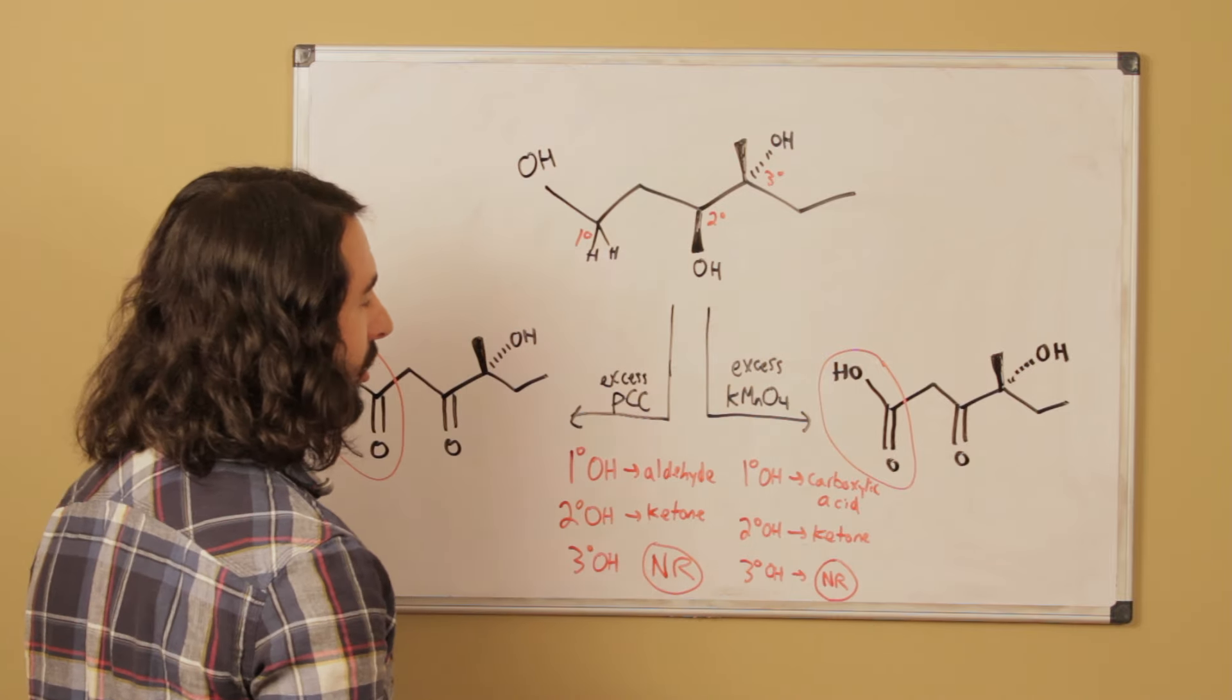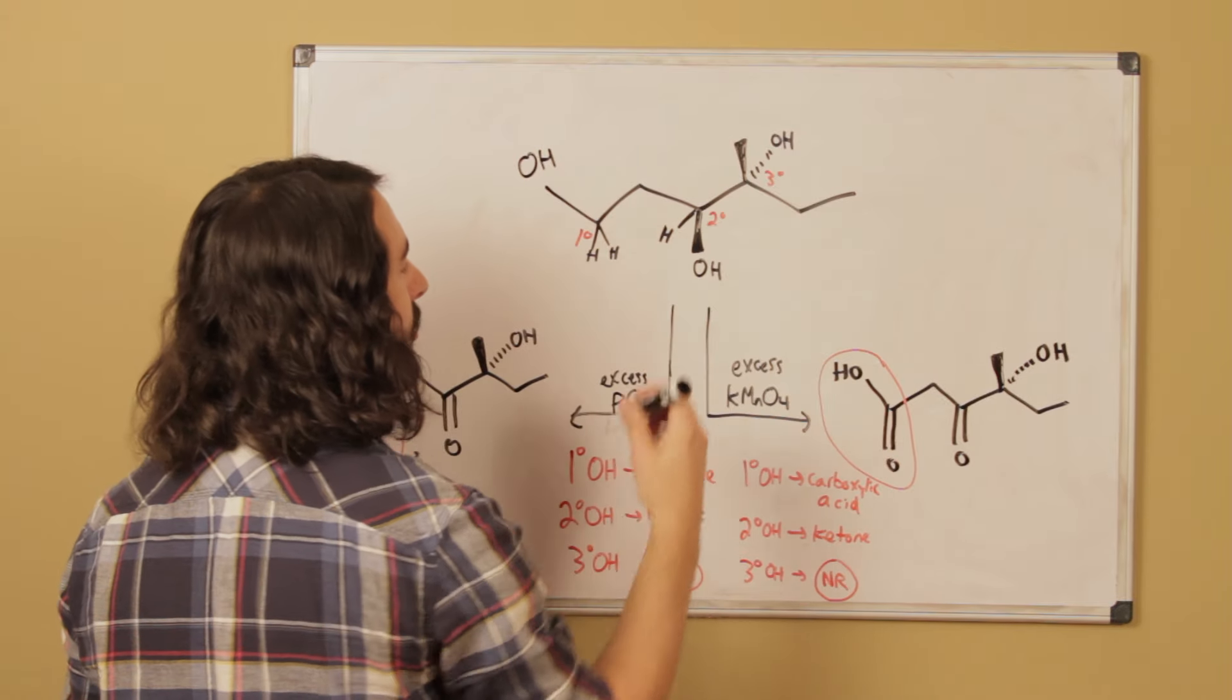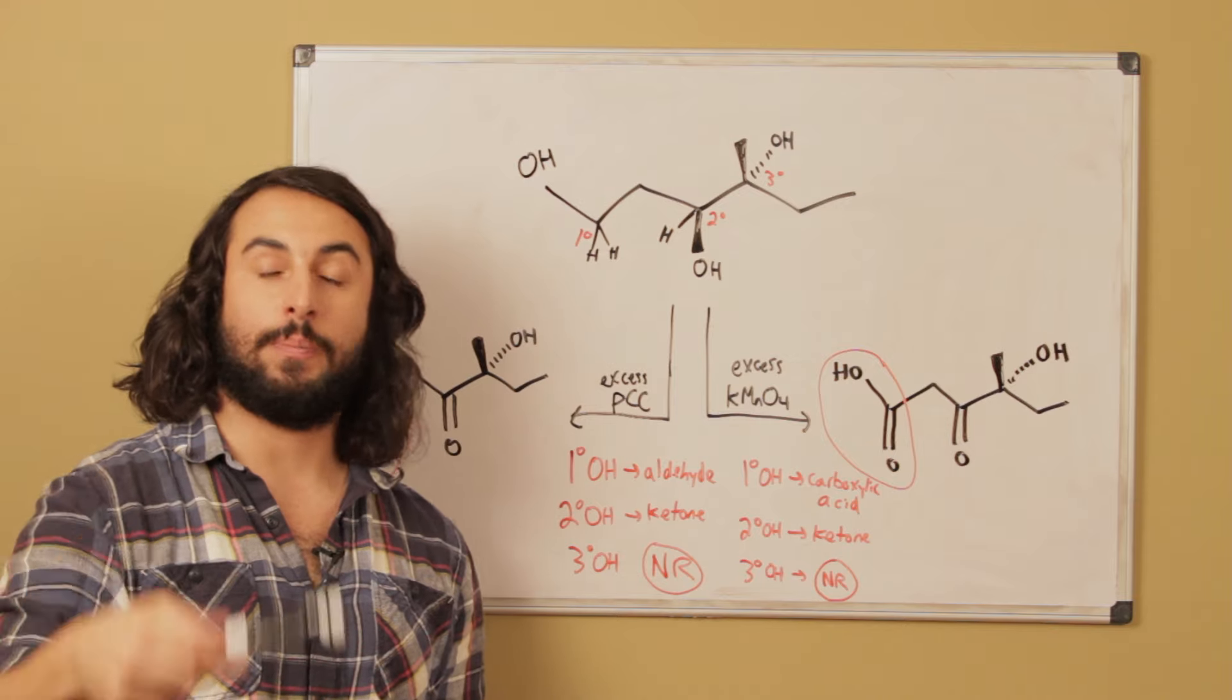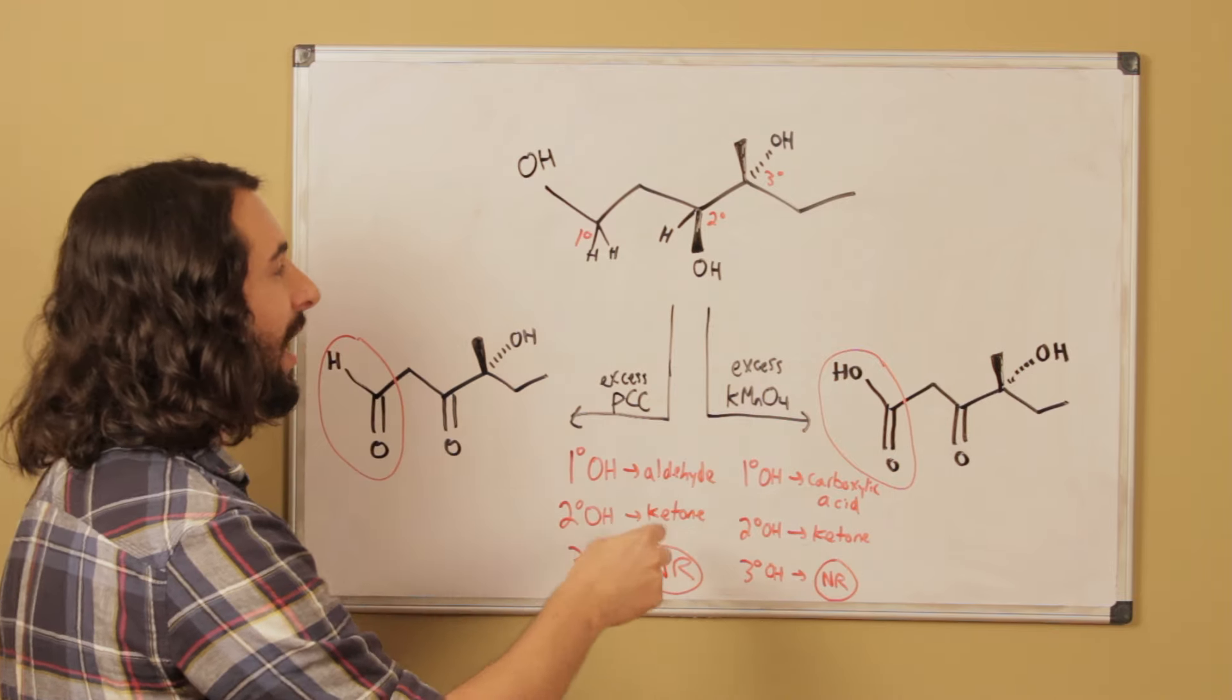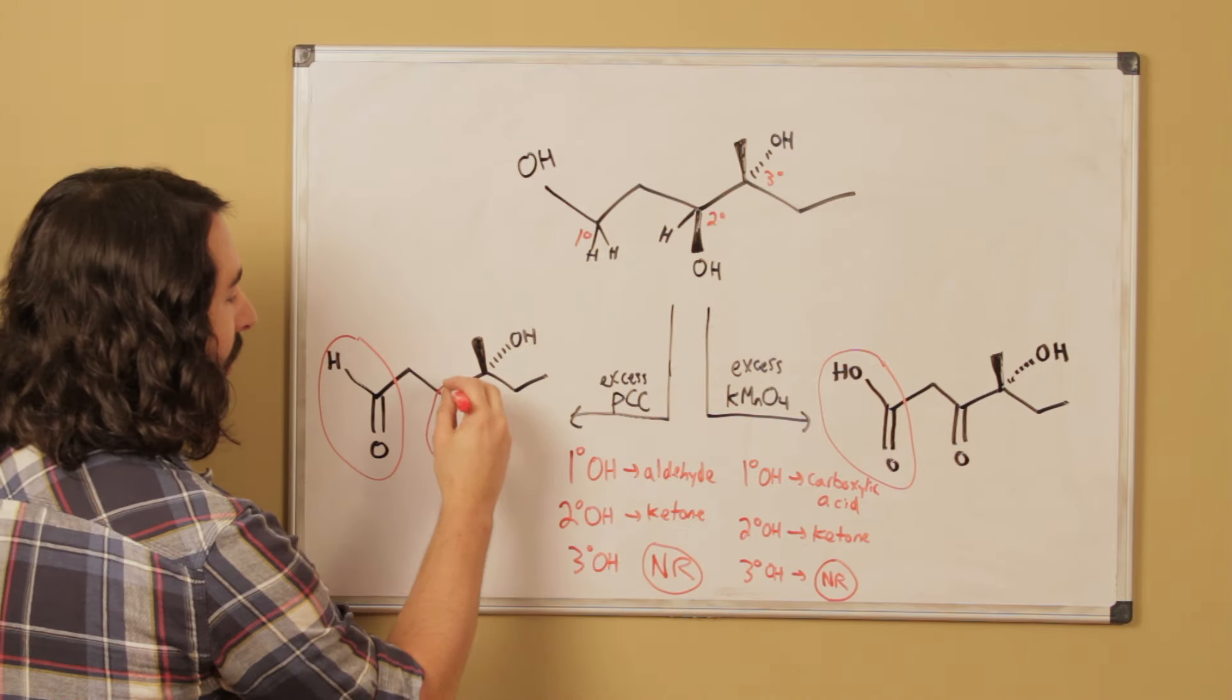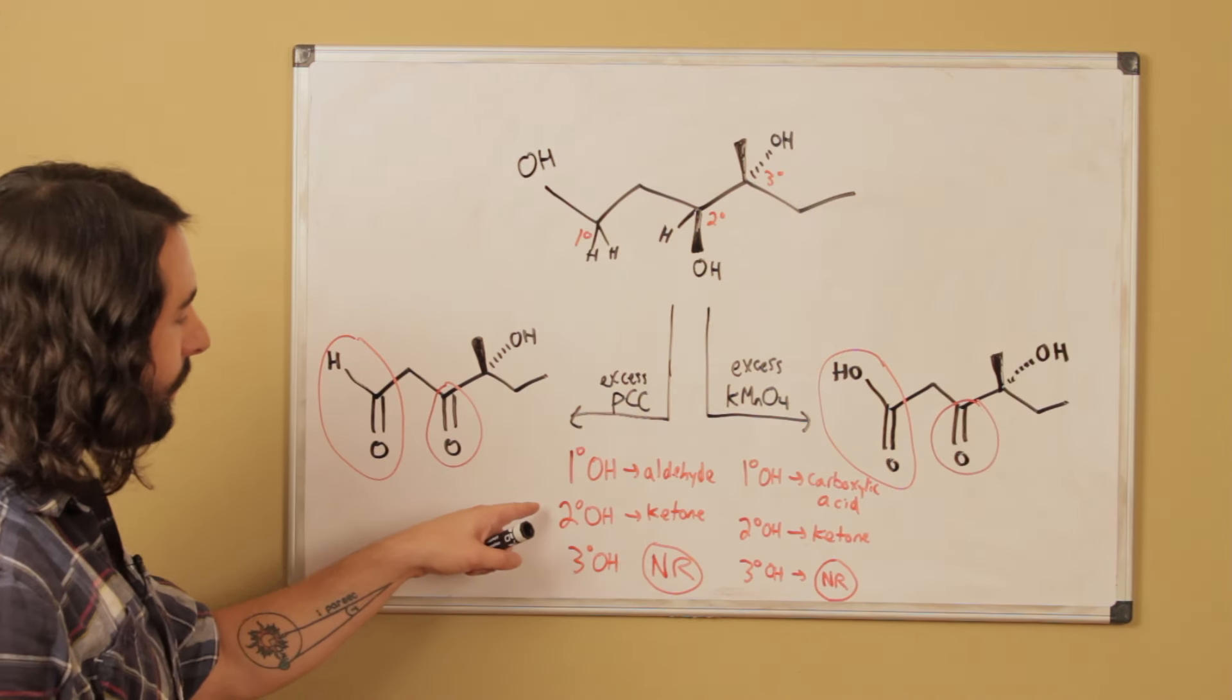If we're looking at a secondary position, there is only one hydrogen here—there is one implied hydrogen—and so there's only one carbon-hydrogen bond to replace with a carbon-oxygen bond. So that is why, regardless of the strength, both of these oxidizing agents are going to bring that to the ketone functional group level.